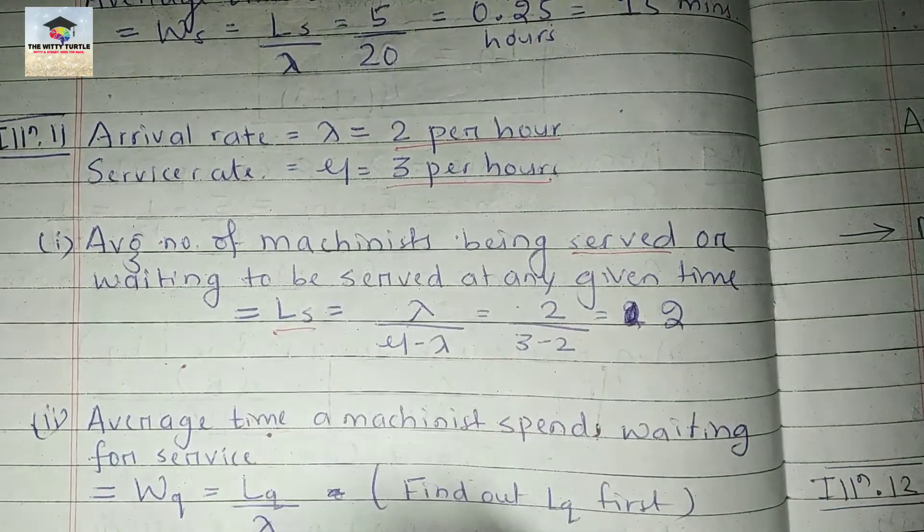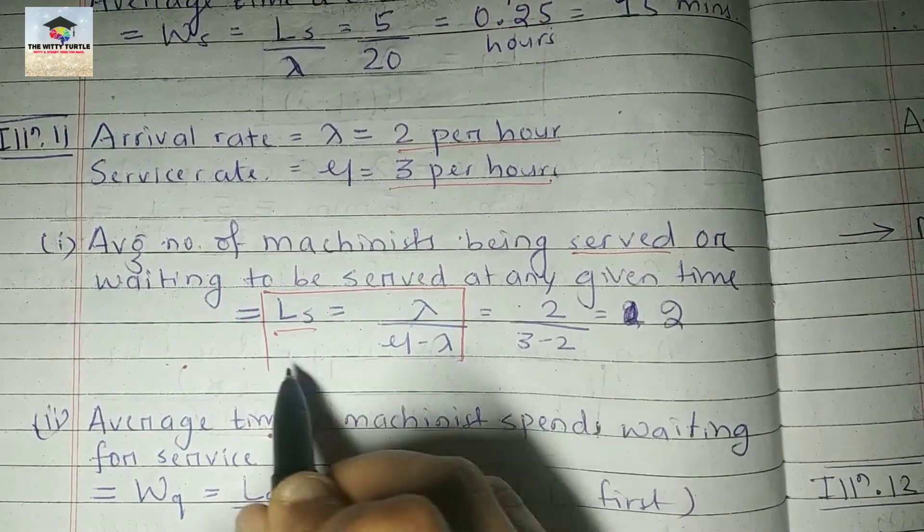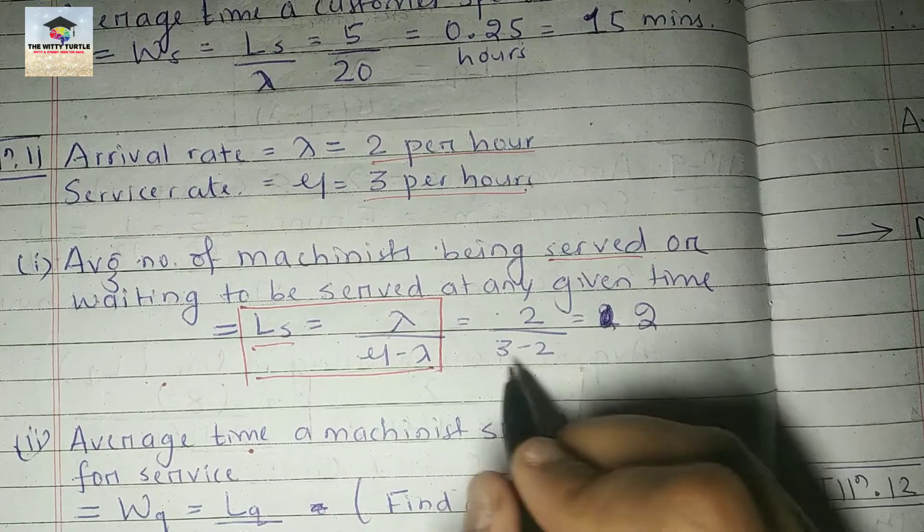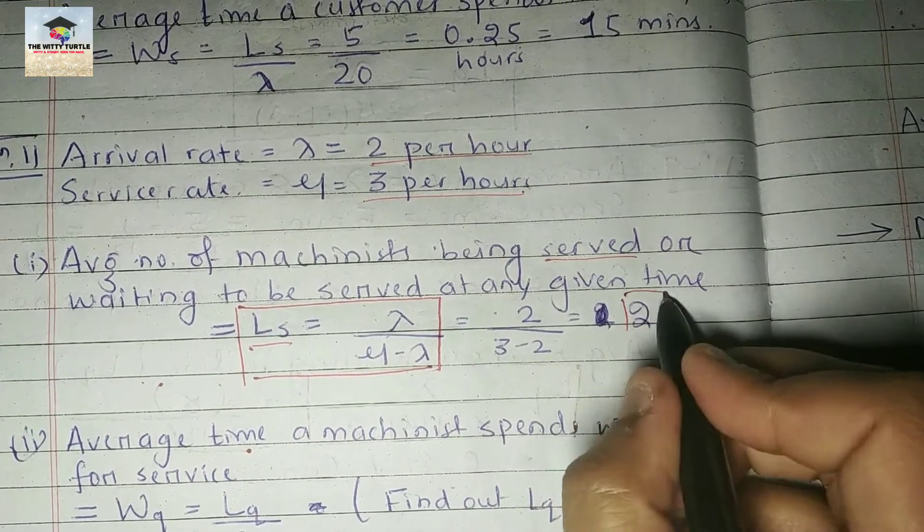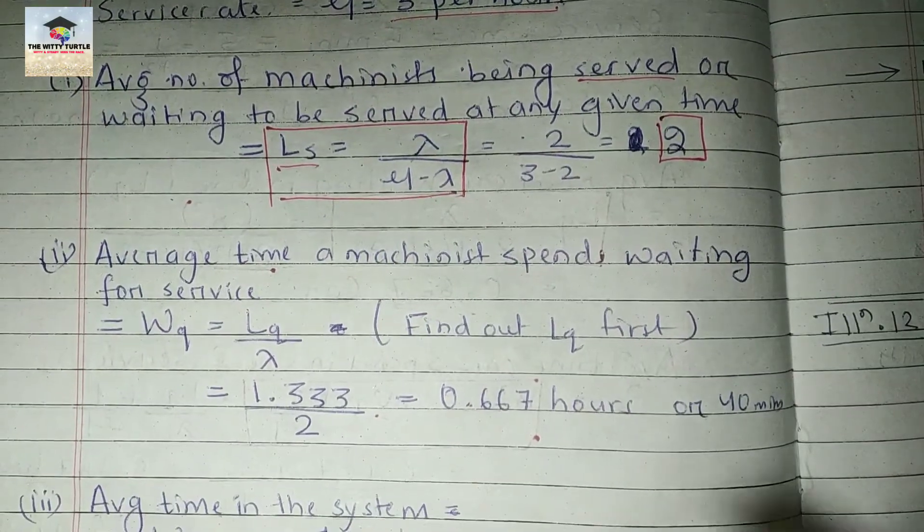We know the formula for Ls is lambda divided by mu minus lambda. This will be 2 divided by 3 minus 2, which is 2 only.